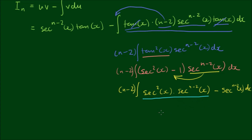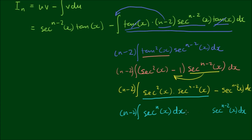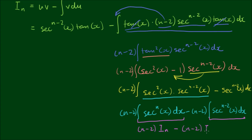Sec squared times sec to the n minus 2 power can be recombined by adding the exponents, giving sec to the nth power again. So inside the integral we have sec to the nth power of x minus sec to the n minus 2 power of x dx. Now we have the integral of two separate entities, so we separate: the integral of the first part minus n minus 2 times the integral of the second part. The first integral is the original integral, so we write it as iₙ again. We call the second integral i sub n minus 2.